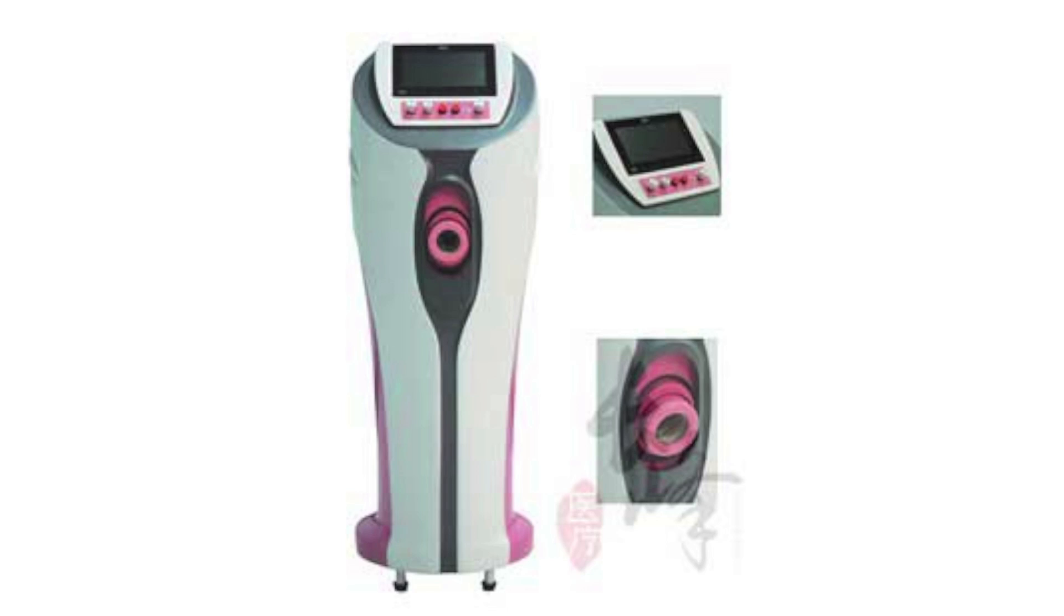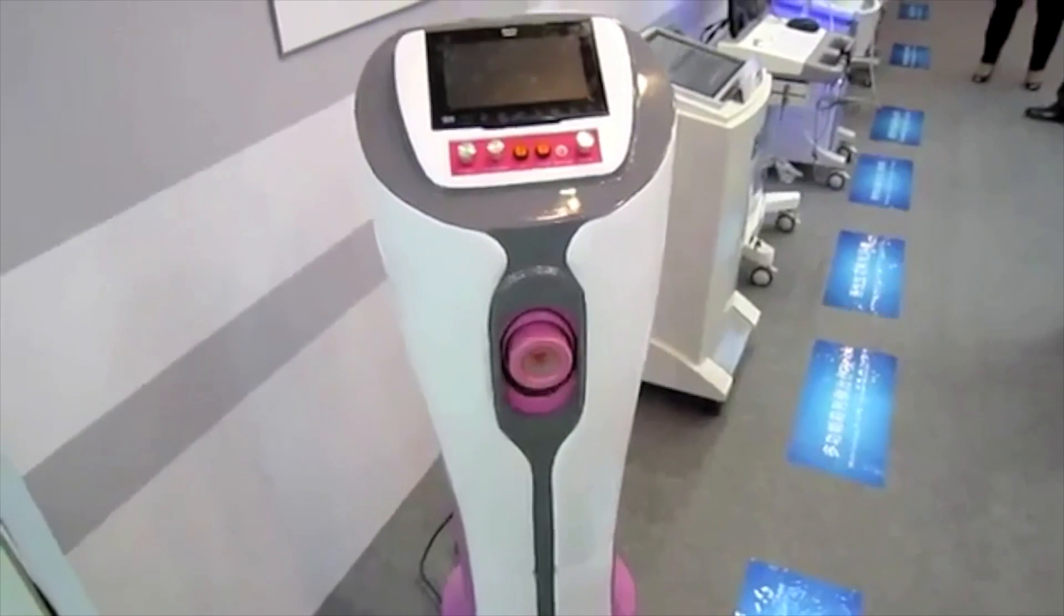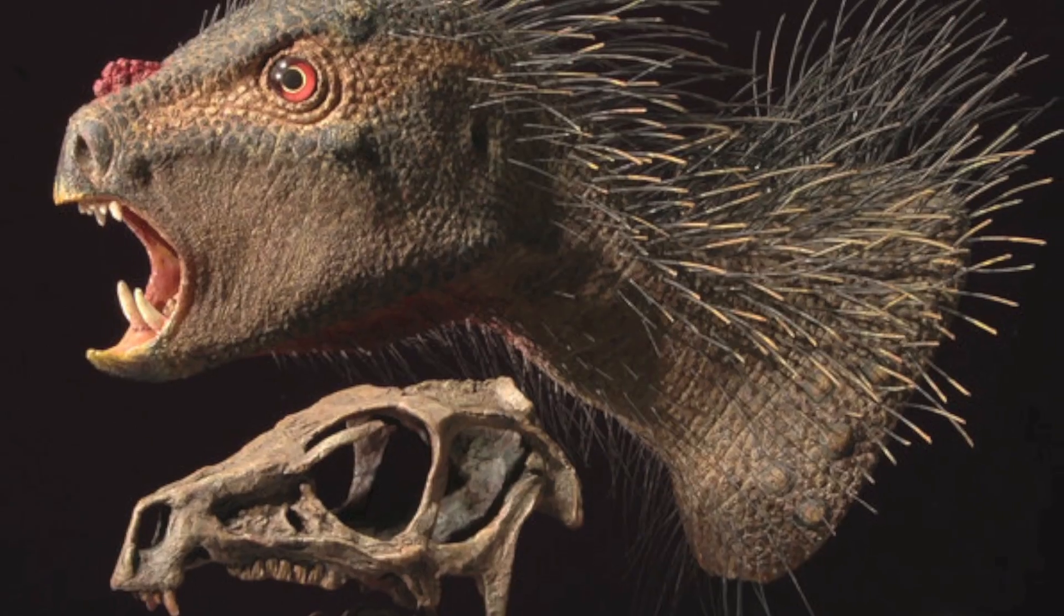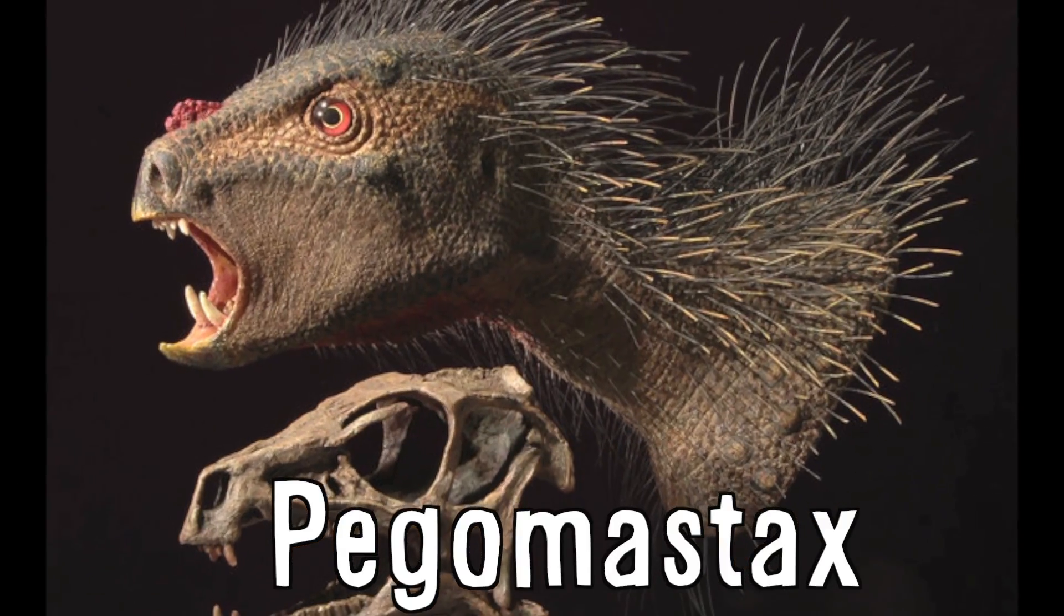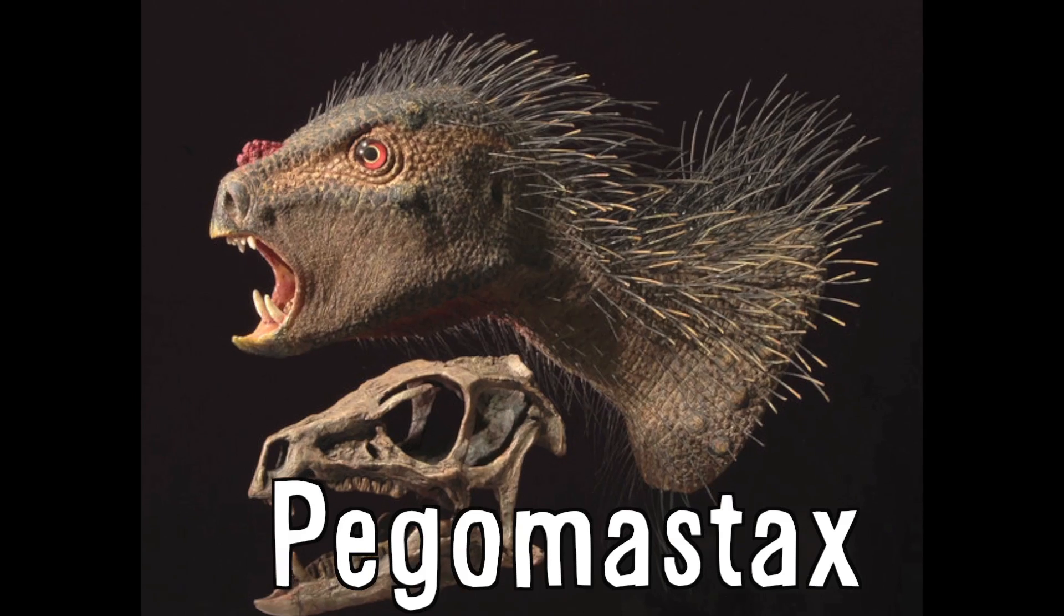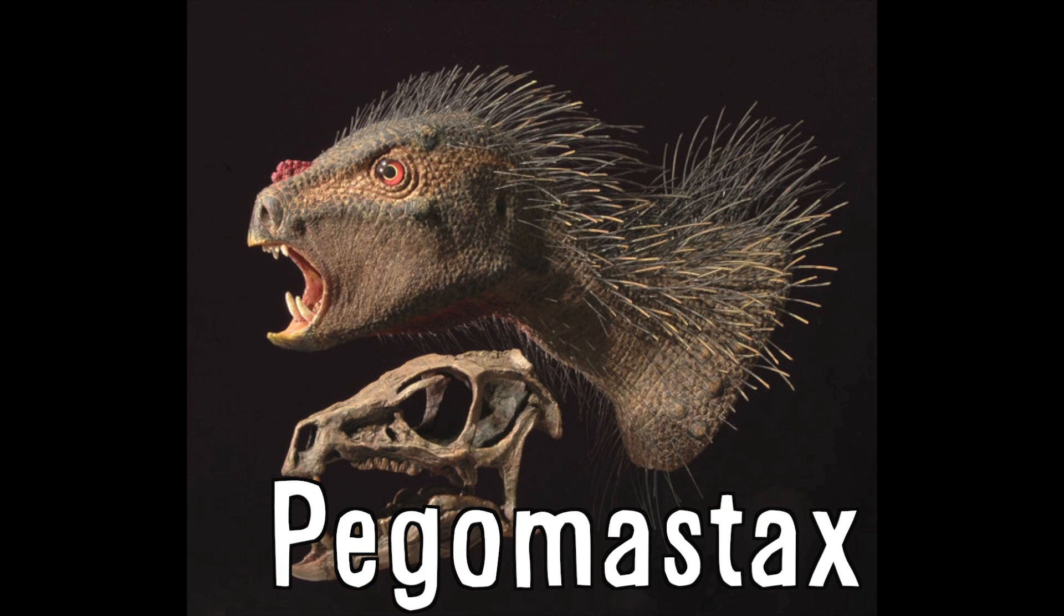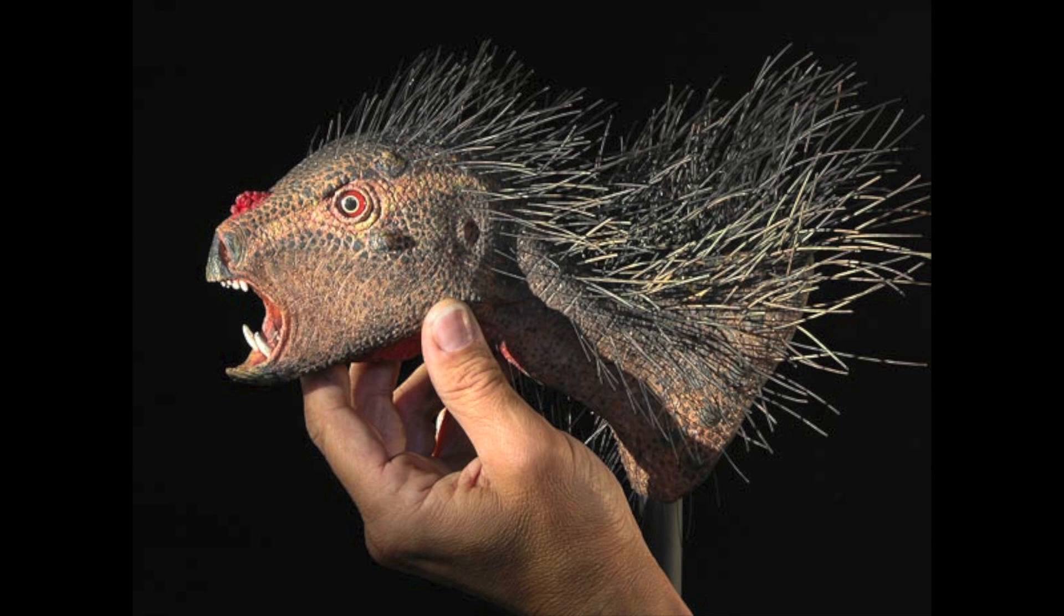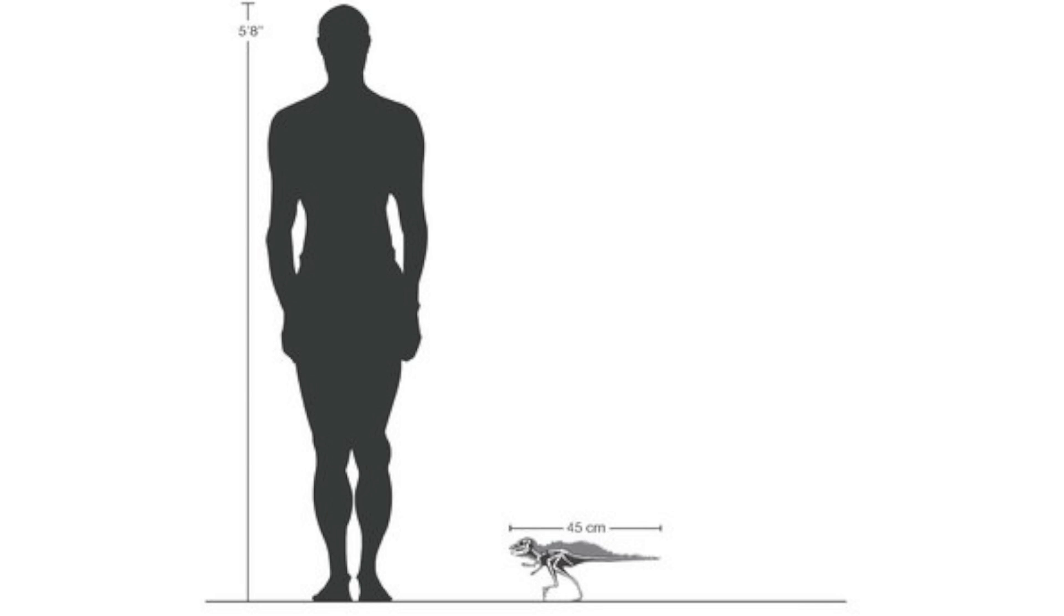Chinese hospitals have introduced this device and I'm just gonna let you guess what it does. Say hello to Pegamastics, a miniature, plant-eating, newly discovered dinosaur with a parrot-like beak, fangs and quills. It's a member of the Heterodontosaurus genus and probably weighed less than a small house cat.